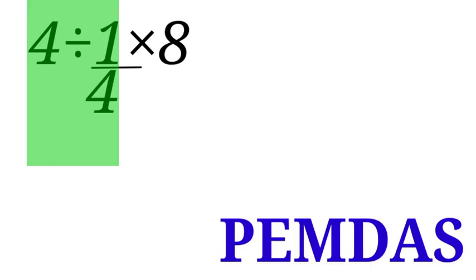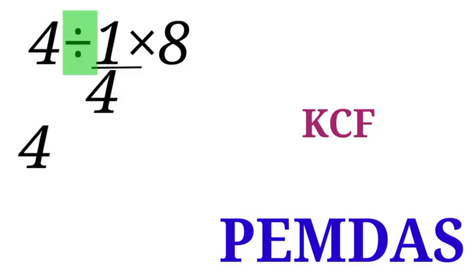Here we are going to use KCF. K stands for keep, C stands for change, and F stands for flip. So we are going to apply that here. K, we are going to keep 4. For the division sign, we are going to change division sign to multiplication sign. And for 1 over 4 we are going to flip it. We are going to take 4 to the numerator and bring 1 to the denominator.